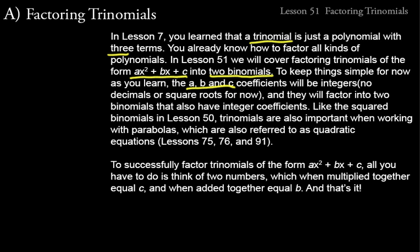We might have something like 3x² + 2x + 7. The x's stay as variables; the coefficients are typically integers — no decimals, no square roots for now — and they'll factor into two binomials that also have integer coefficients. Trinomials are also important when working with parabolas, also referred to as quadratic equations, which we'll work with in lessons 75, 76, and 91.